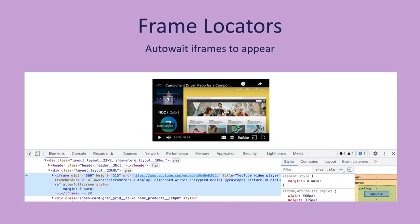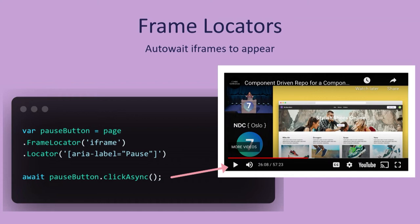You can also test iframes. With frame locators, it auto-waits for the iframe to appear — no need to set timeouts. For example: `var pauseButton = page.FrameLocator("iframe").Locator("[aria-label='pause']")`, then `await pauseButton.ClickAsync()`. If you have two iframes, you need to specifically select the correct one. YouTube has aria-labels, so you can test the pause or play button. This is useful for any iframes you want to test in your application.